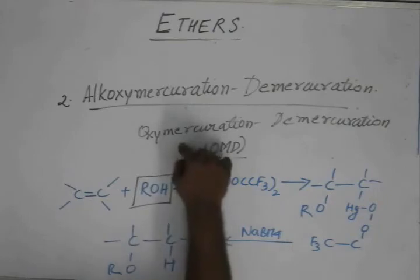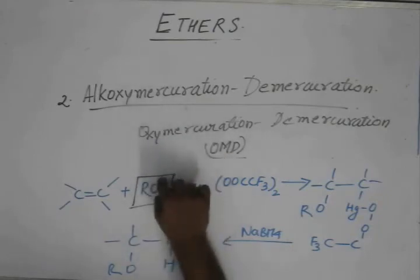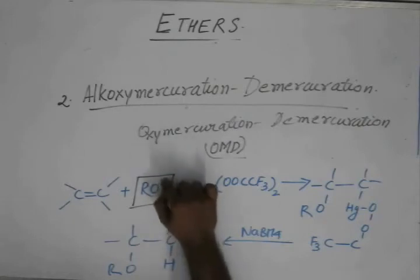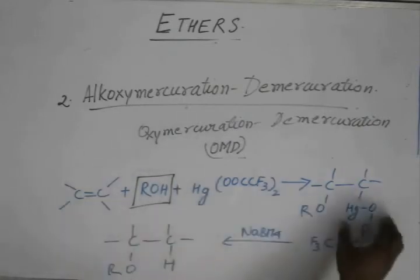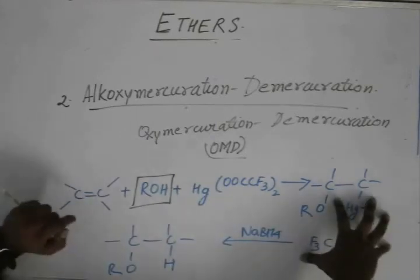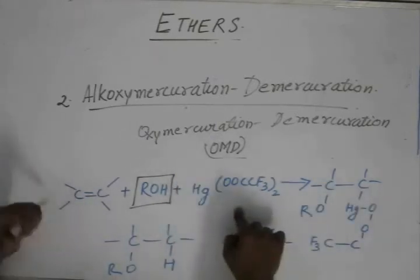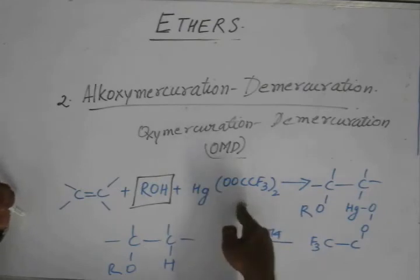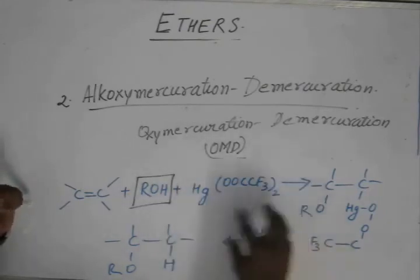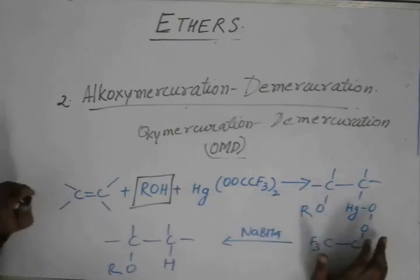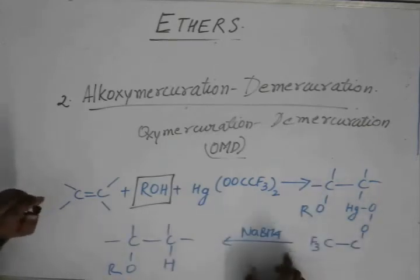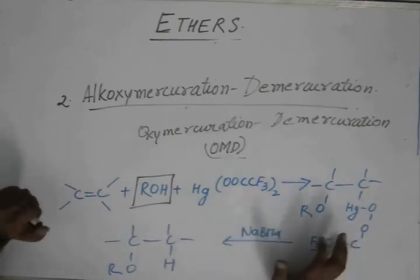In oxymercuration-demercuration we used water. In AMD we are using alcohol. This is the only difference. In this case, OR is being attached and this whole Hg salt is being attached to the double bond, while in the case of OMD, OH and this mercury salt was being attached to the double bond. This reaction, the demercuration reaction, is exactly the same.